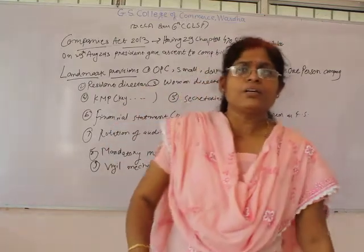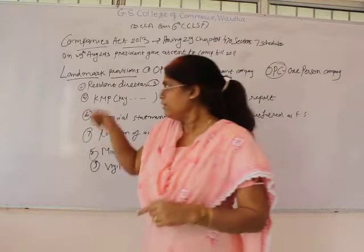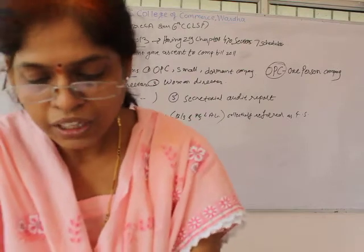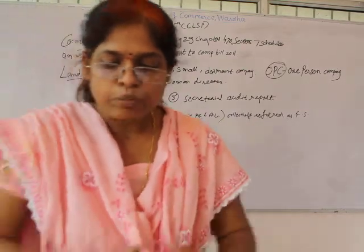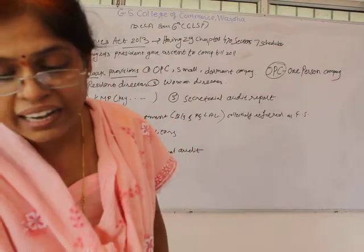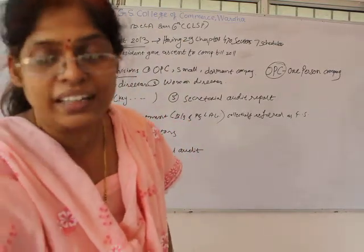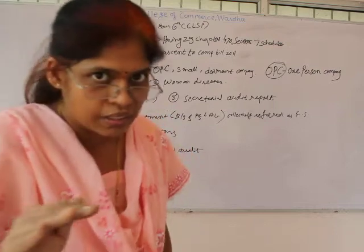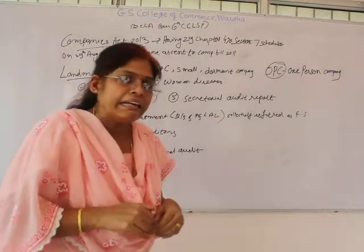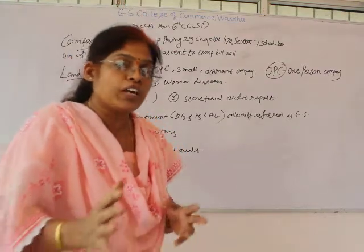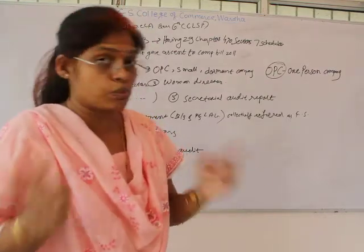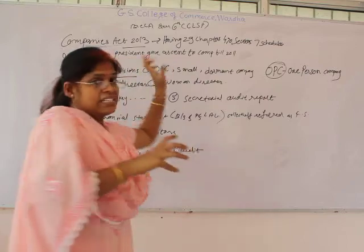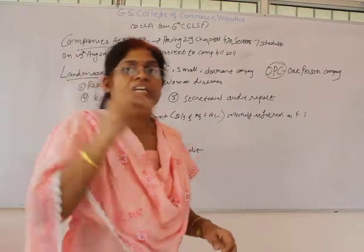The next landmark provision is the resident director. It was a provision made in the Companies Act that there must be a resident director in each company. The act provides that every company shall have at least one director who has stayed in India for a total period of not less than 182 days, meaning he must be residing in India for more than 182 days — that is more than 6 months. Only then can he be called a resident director.